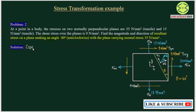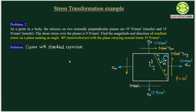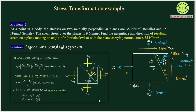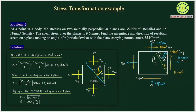Our first step is to compare with the standard expression we have derived earlier, and based on that we will obtain the data. The stress acting on the x-plane in the x direction, sigma_xx, is tensile with value 35 N per mm². In our standard derivation, sigma_xx is also tensile. So the given situation is the same as the standard condition, therefore sigma_xx is positive 35 N per mm².